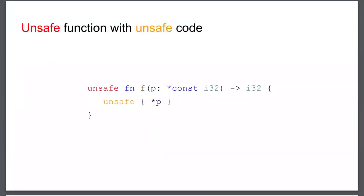Next, the bottom-right quadrant: an unsafe function with unsafe code. This function takes a pointer and returns the content of the pointer — it performs a read or load and returns the value. The red unsafe marks the function, and the orange unsafe marks the code block. The pointer p is a pointer to a constant integer — the same meaning as const in C.